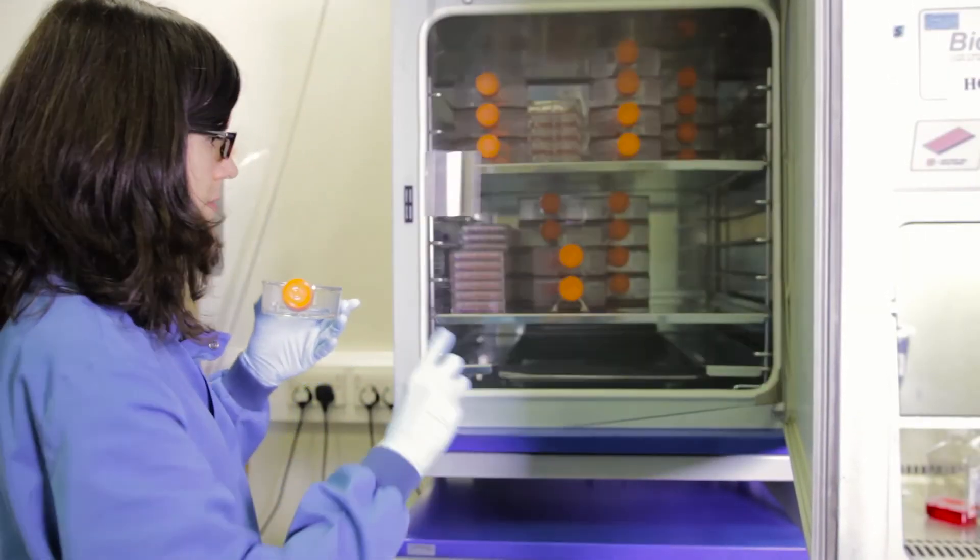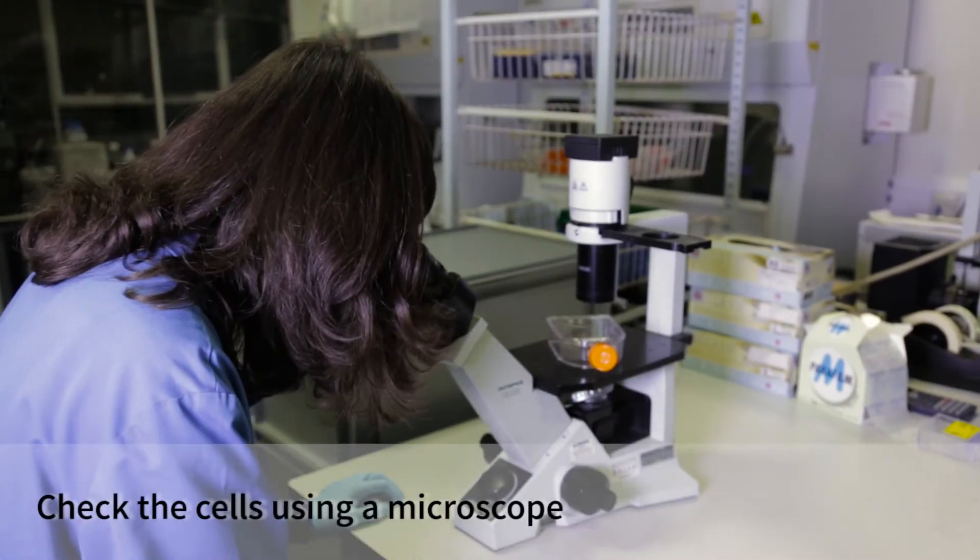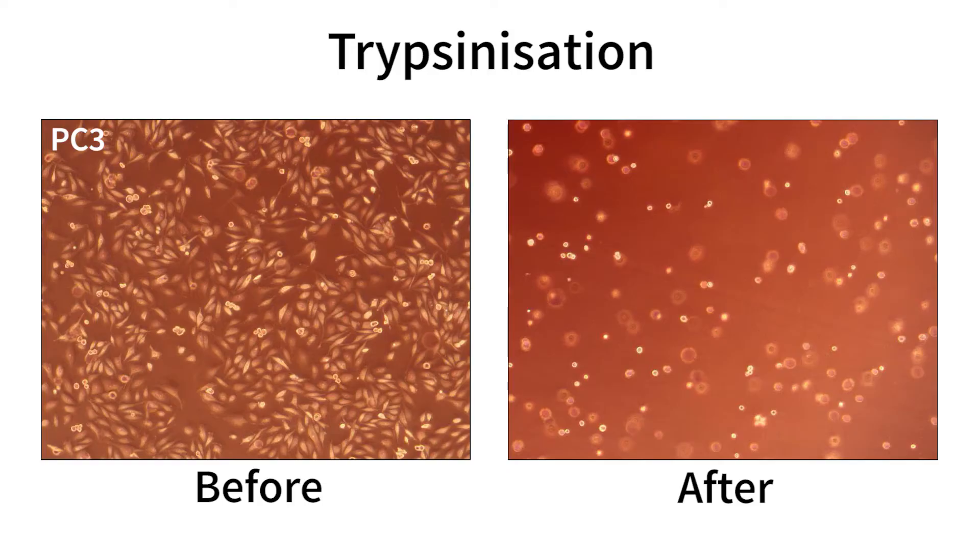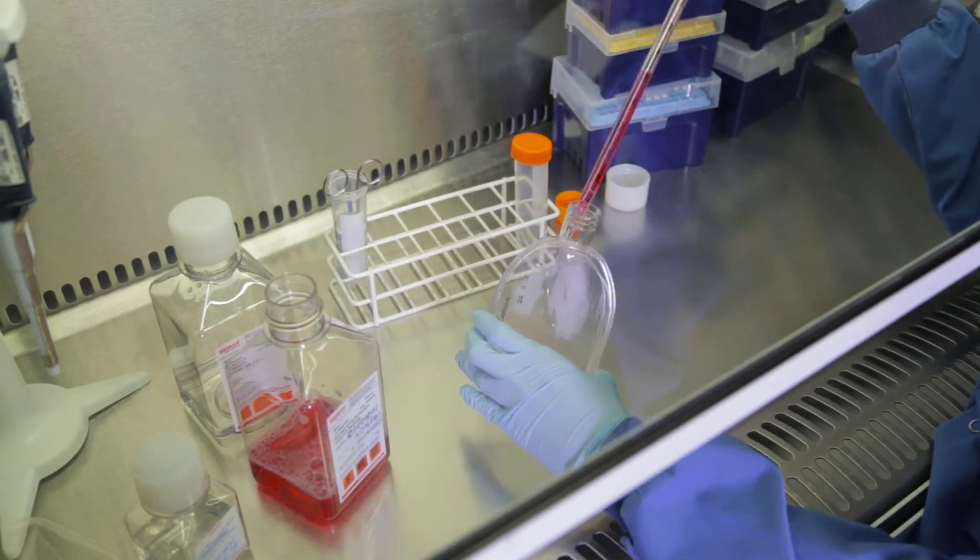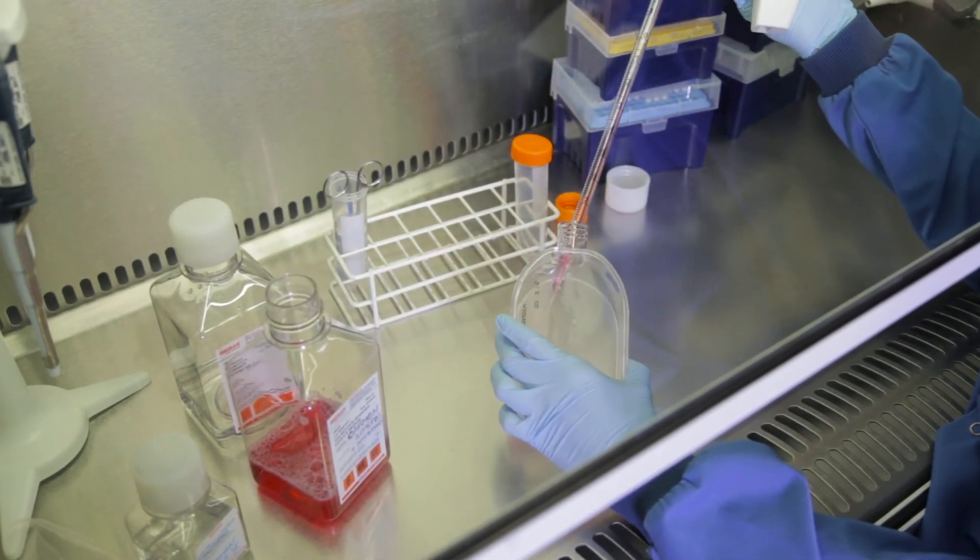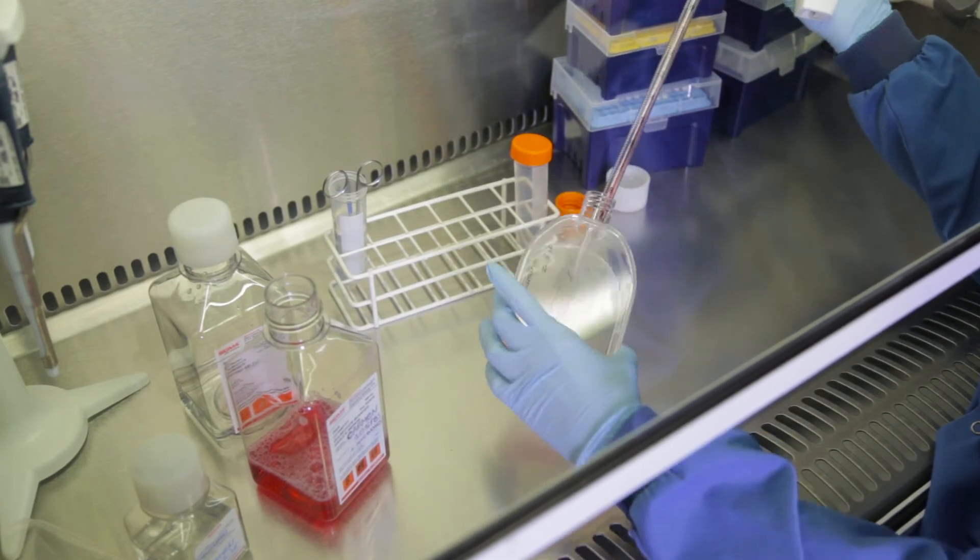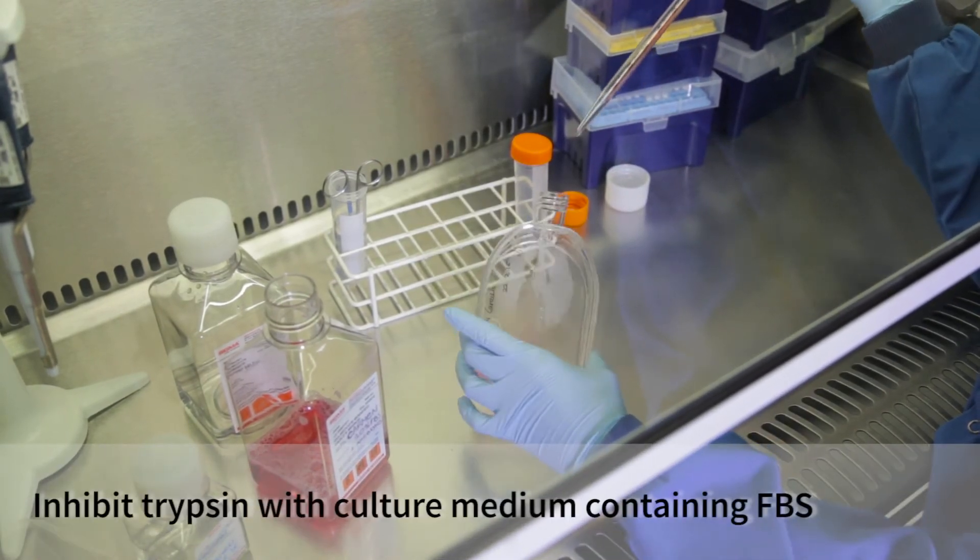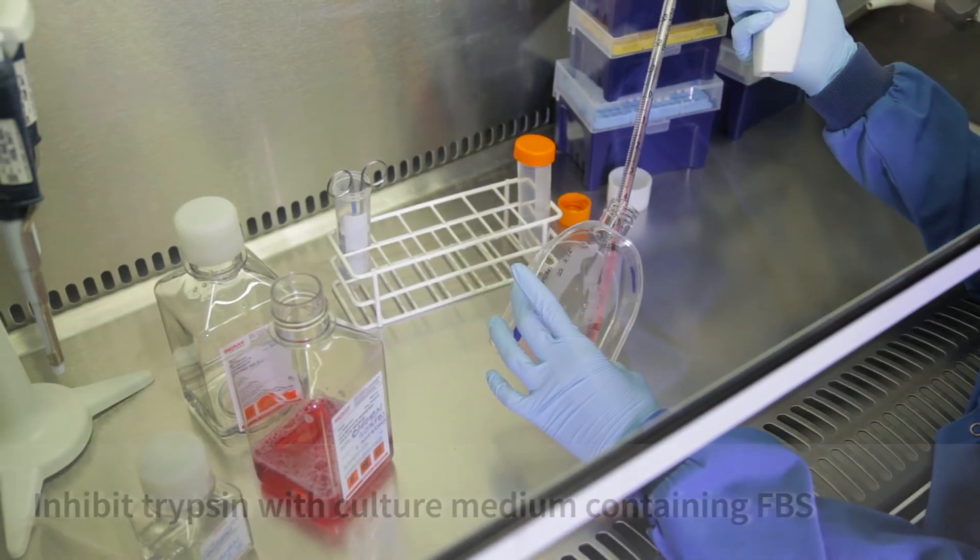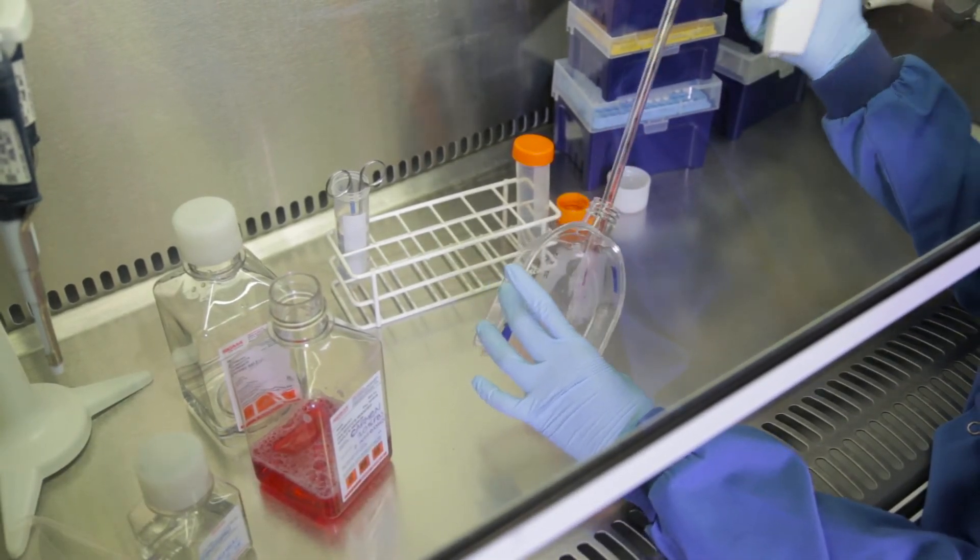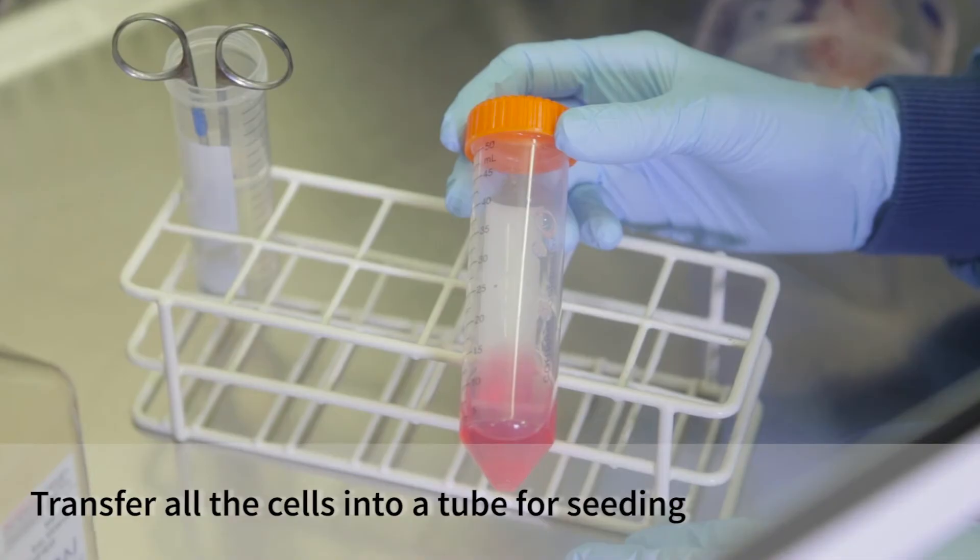All the cells should now be detached. I will check using the microscope. Now that the cells are detached and in suspension, I will neutralize the trypsin, as it might damage the cells if it remains active. I add media containing 10% of fetal bovine serum, which inhibits the enzyme. And I transfer all the cells into a tube before seeding them.